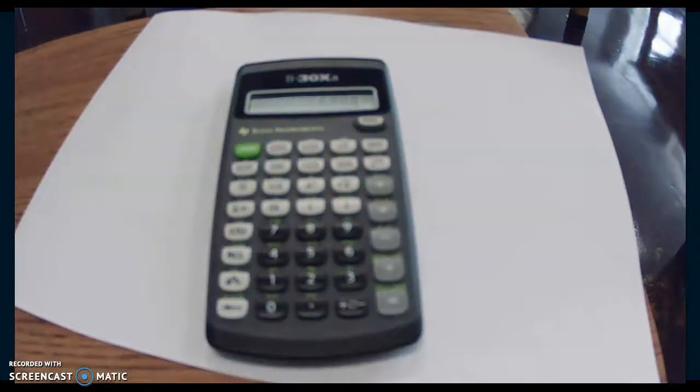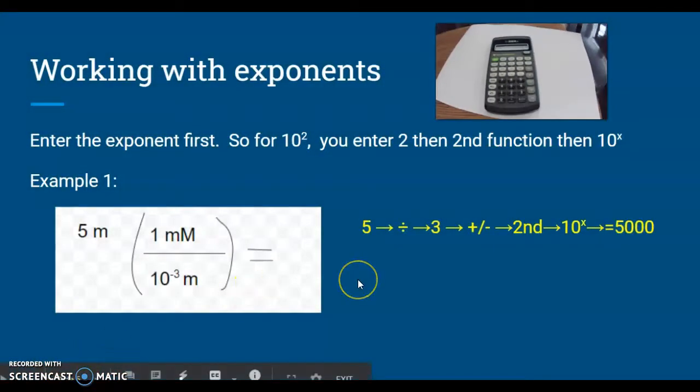Then we hit enter and we get 5,000 for our answer. Once you get the hang of that, it's actually easier. You just have to remember, this is functioning more like an actual calculator than a computer, which some of the more advanced models do. So you're inputting the exponents first.